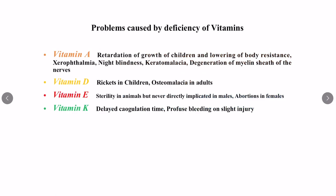Now, the problems caused by deficiency of fat-soluble vitamins. Vitamin A deficiency can cause night blindness, xerophthalmia (lack of tears), retardation of growth in children, lowering of body resistance, keratomalacia, and degeneration of the myelin sheath of the nerves. Vitamin D deficiency can cause rickets in children and osteomalacia in adults. Vitamin E deficiency can cause sterility in animals, and abortions in females. Vitamin K deficiency can cause delayed coagulation time, profuse bleeding, and bleeding from slight injury, because it is a clotting factor.